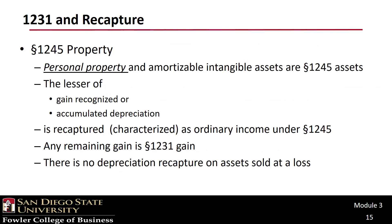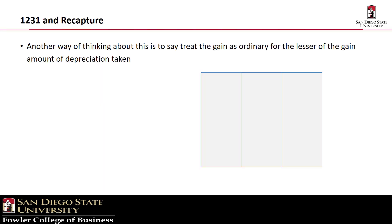This is where Section 1245 comes into play. Section 1245 requires that on sales of Section 1245 property, an amount that is the lesser of the gain recognized or the depreciation taken must be re-characterized as an ordinary gain. Any remaining gain can be treated as 1231 gain. Note that Section 1245 applies to gains only, not to losses. To restate the rule: treat the gain as ordinary to the extent of depreciation taken.